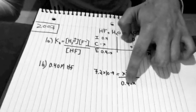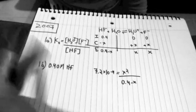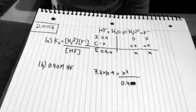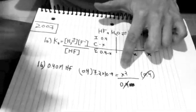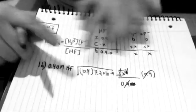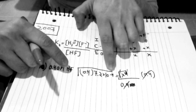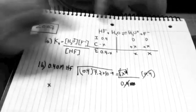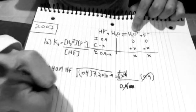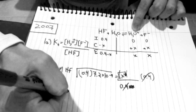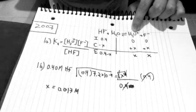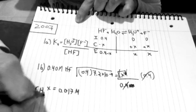I'm going to assume it only slightly dissociates because it's a weak acid, so I'm not going to include the minus X — I don't have to use the quadratic formula. I'm going to multiply both sides by 0.4 to get rid of my denominator, then take the square root of both sides to get rid of X squared. So X equals the square root of 0.4 times 7.2 × 10⁻⁴. That means X, which is the hydronium ion concentration, equals 0.017 molarity. That's my final answer for H₃O⁺.